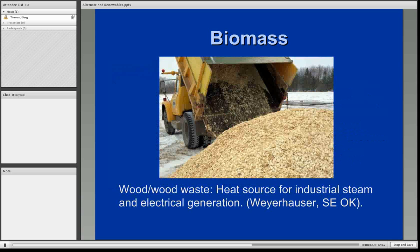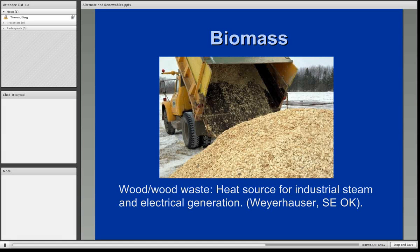Another form of biomass is wood itself or wood waste. You can burn wood, wood pulp, or wood chips as a heat source for industrial steam and electrical generation. Weyerhaeuser, one of the largest paper product manufacturers in the country, has a very large facility in the southeastern part of Oklahoma. They recycle their own wood pulp and wood chips to create steam on site, which is used in the production of certain paper products and can also be used to generate their own electricity.